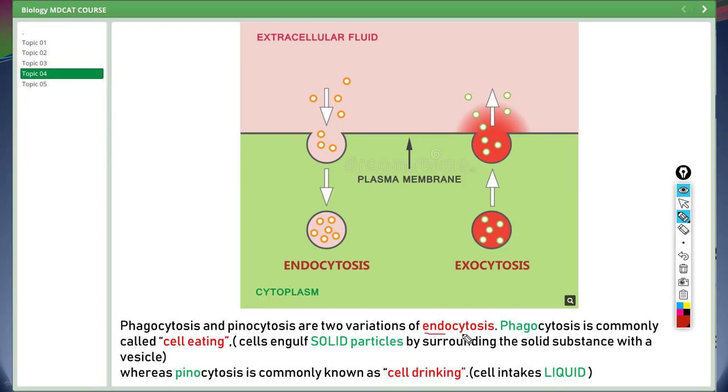Phagocytosis and pinocytosis are two variations of endocytosis. Phagocytosis is commonly called cell eating because in this cell engulfs solid particles by surrounding the solid substance with a vesicle. Whereas pinocytosis is commonly known as cell drinking because cell intakes liquid.